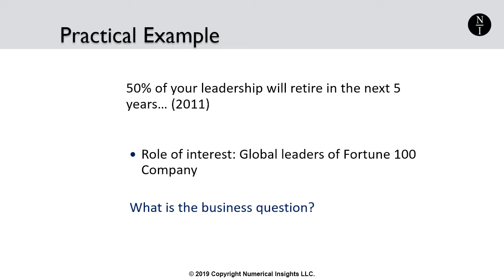My first thought was, how do they know that this is actually true? They don't know our company and they don't have access to our data. So the business question to answer at this point is: what exactly is the risk level to the continuity of our leadership?